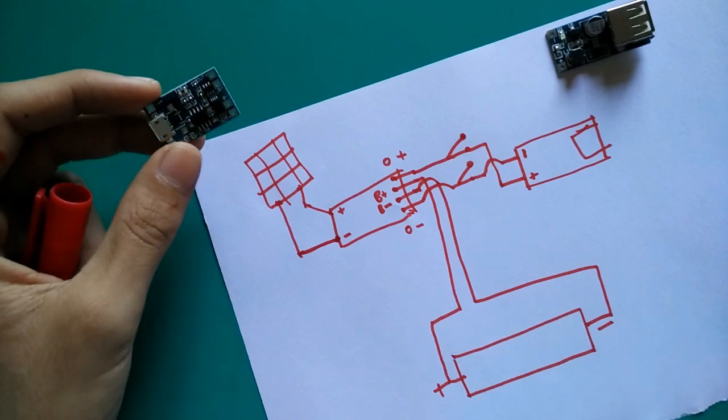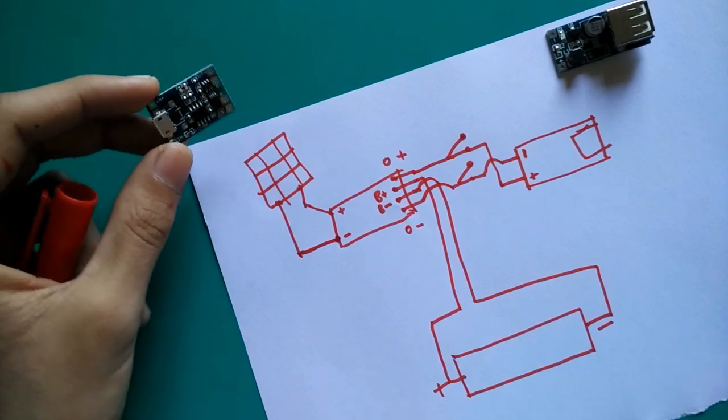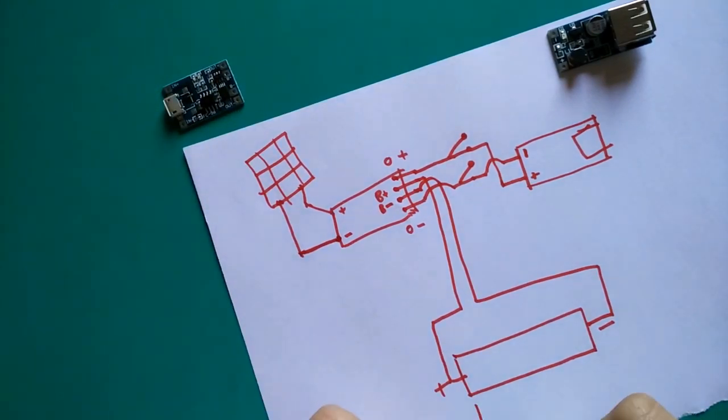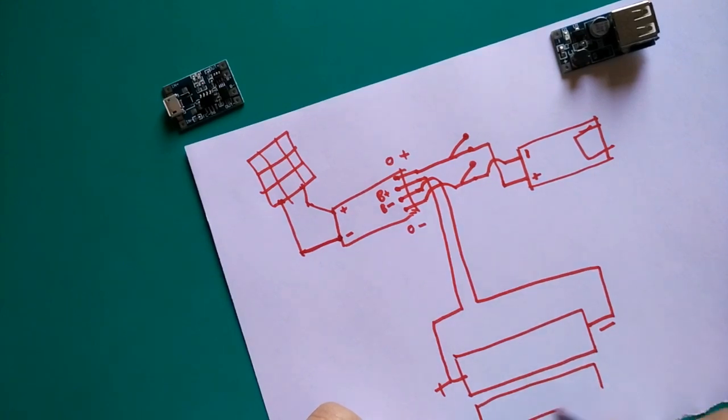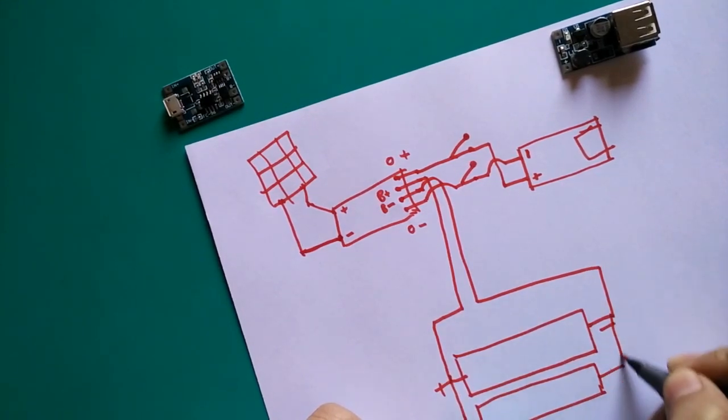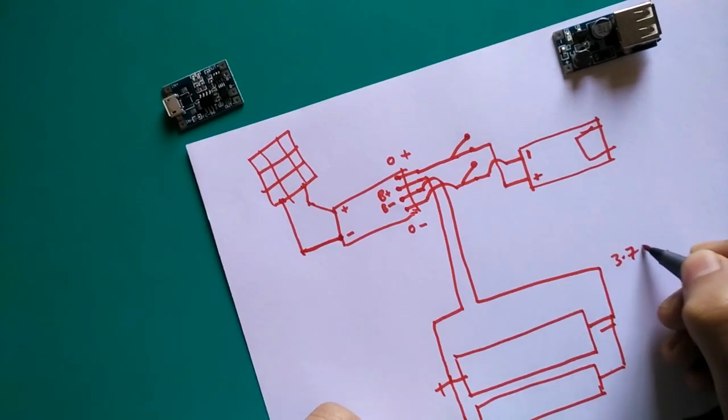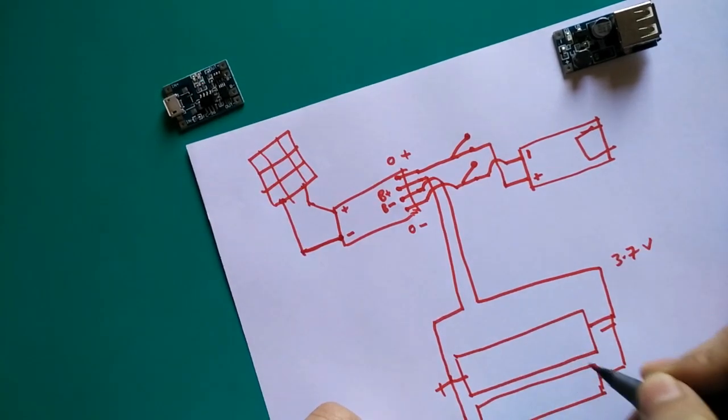If you want to connect more batteries to get more mAh for your power bank, connect them in parallel, never connect in series. In parallel, the output will be 3.7 volt and the mAh will be added, current will be added.